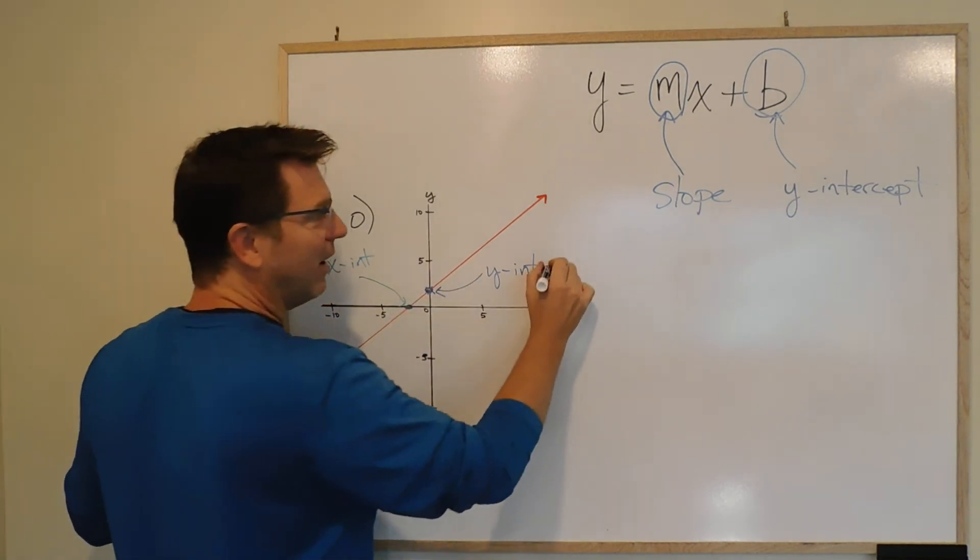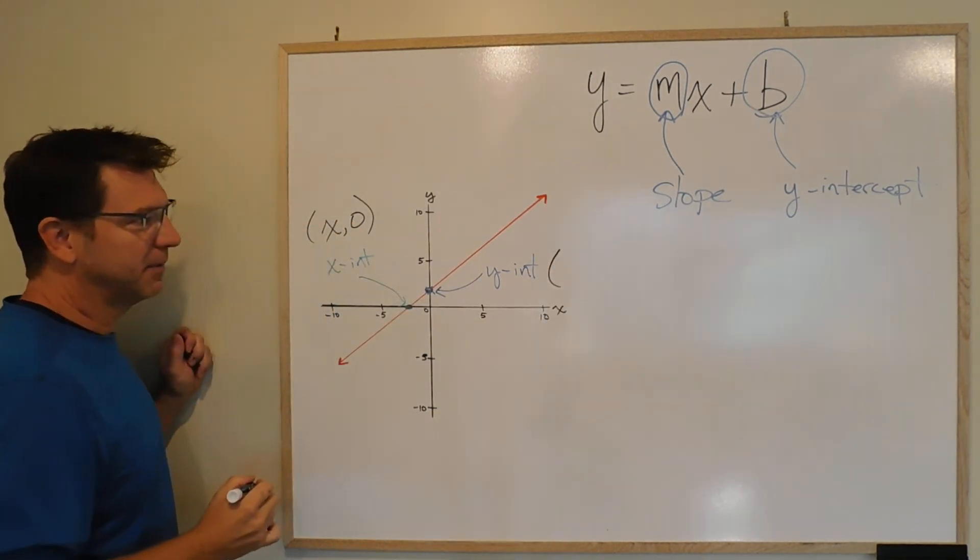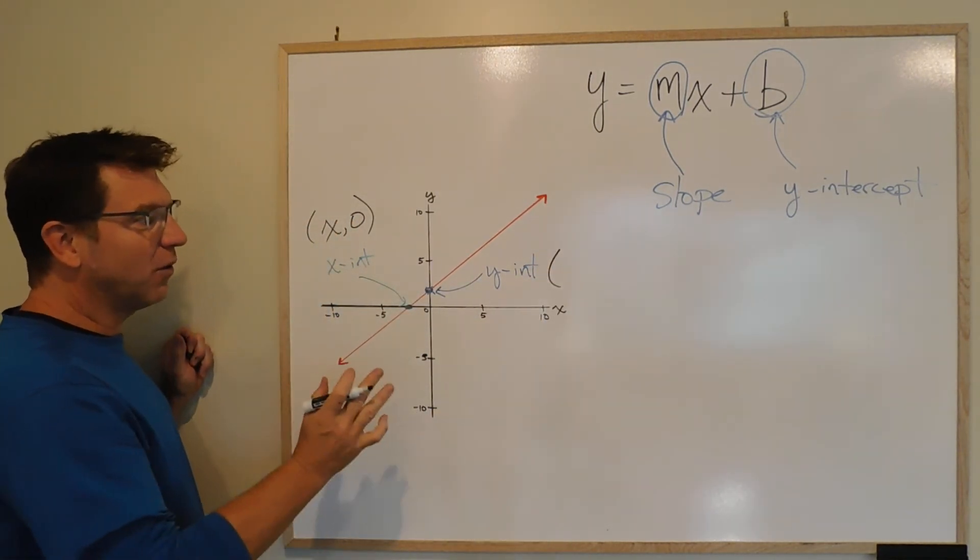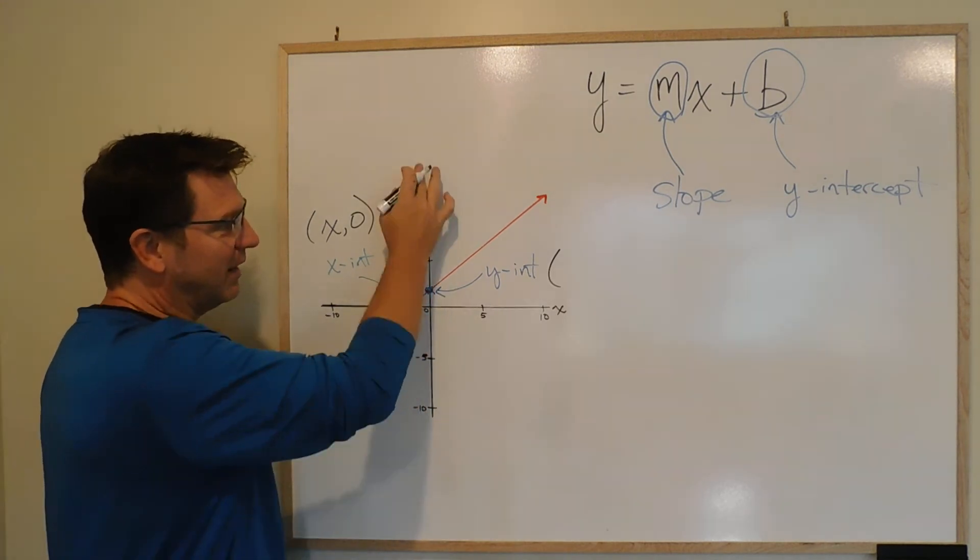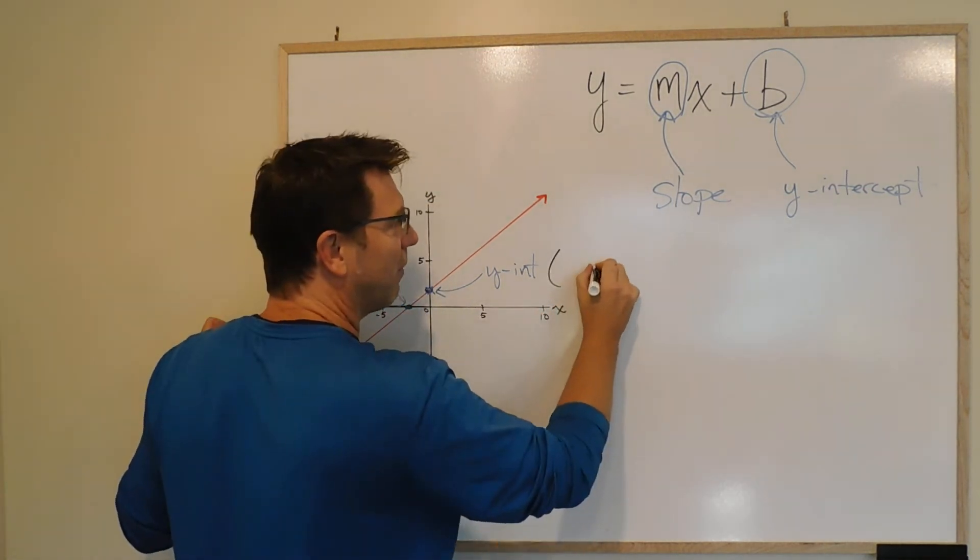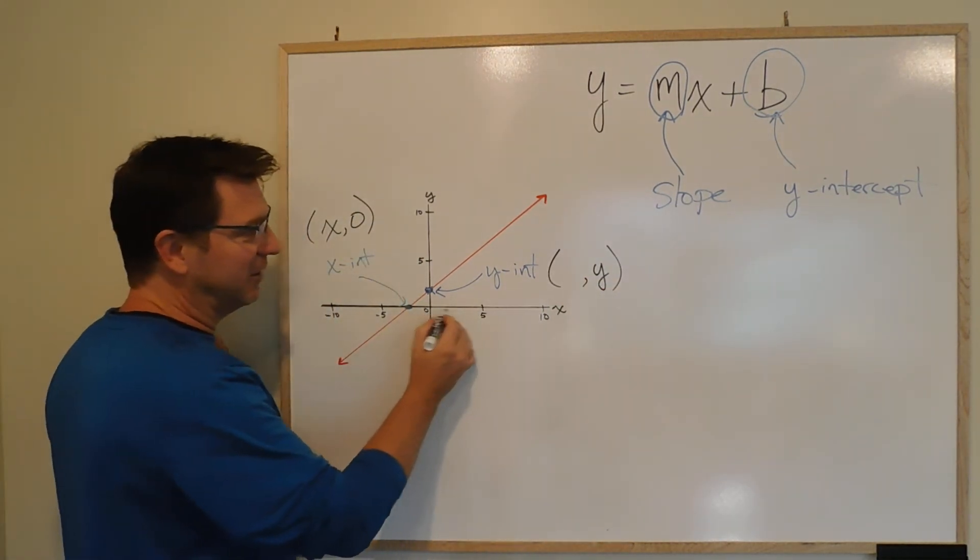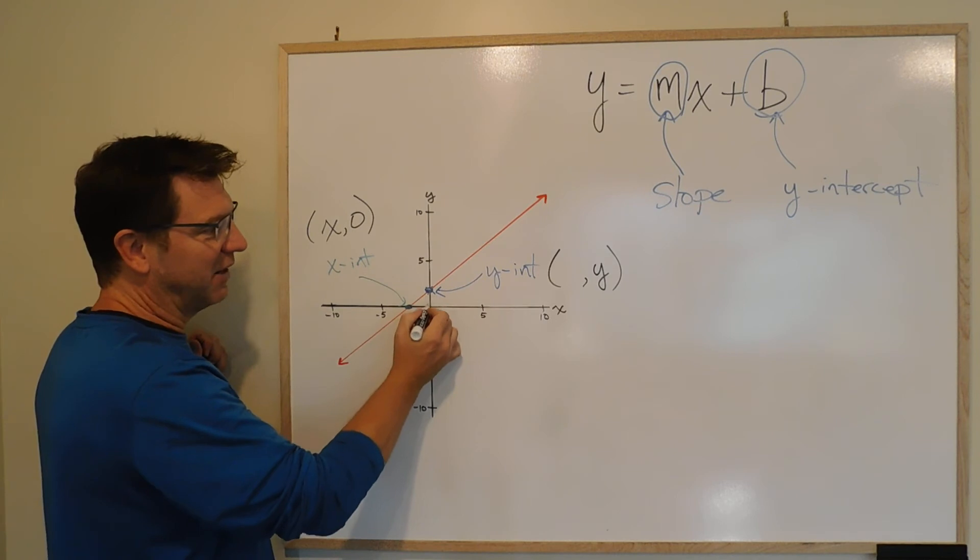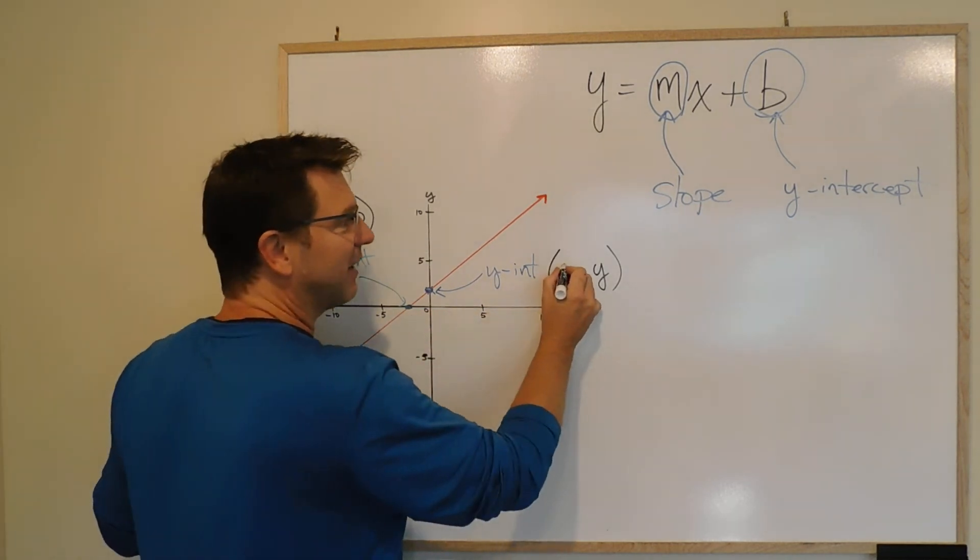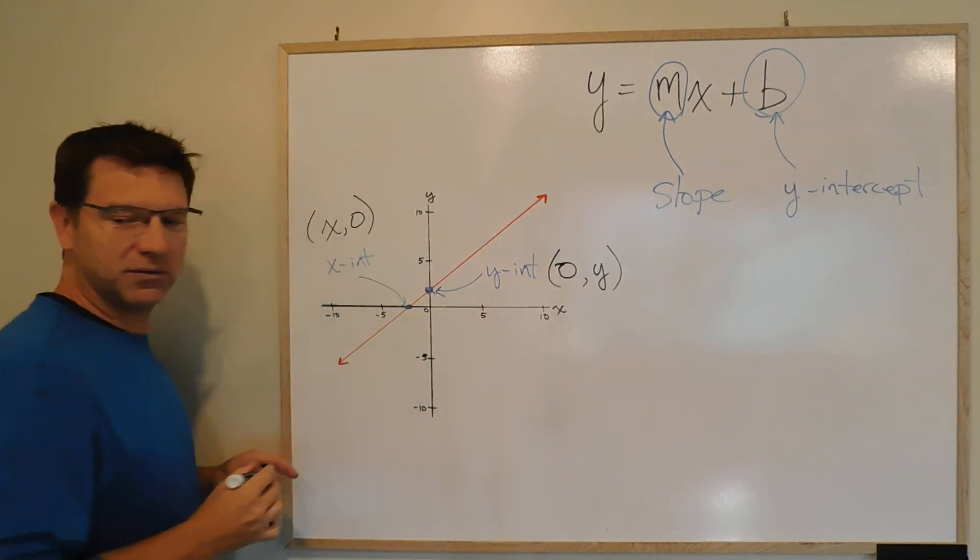Similarly, when we have the y-intercept, we don't know what y is. Y is somewhere along the y-axis, so we do not know what y is. But we know that the x-value is neither positive nor negative, because it's right on the 0 line. So the x-value is always 0.